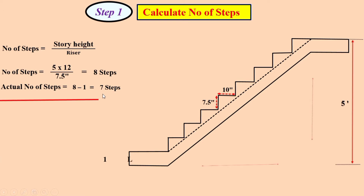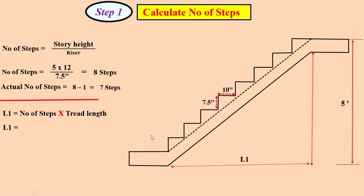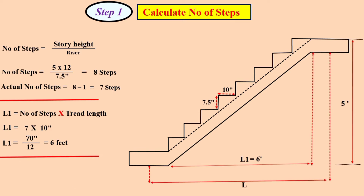Now dear students, for the total length: the total number of steps is 7. If we multiply this by the tread size we get L1, which is 70 inches. If we divide by 12 to convert to feet, we get 6 feet. As you know, for design purposes we do not use this clear span length directly for the stair; instead we use capital L.